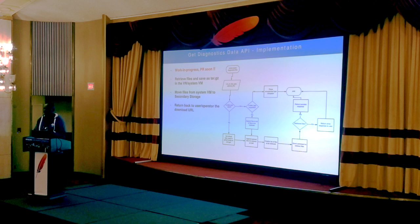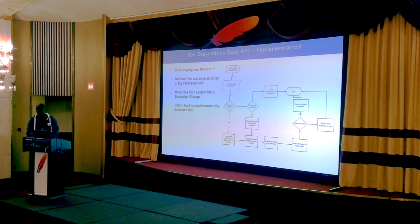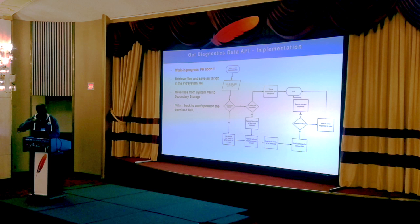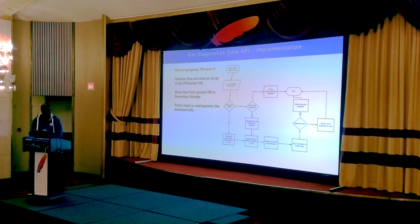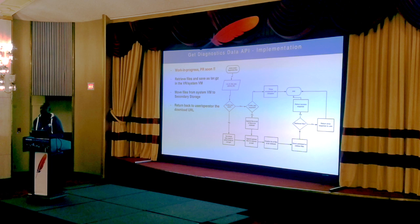This is currently a work-in-progress API and a PR will come soon in upstream. The beginning-to-end flow: it takes the input, retrieves the files, and returns a success response to the admin containing the URL. The admin can then go and download their files. It retrieves files from the system virtual machine, compresses them, moves them to secondary storage, and returns the URL link to the operator.